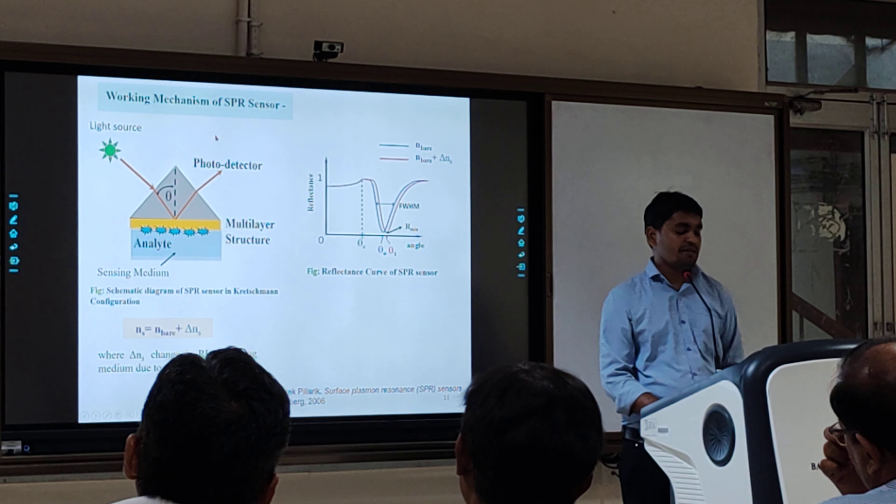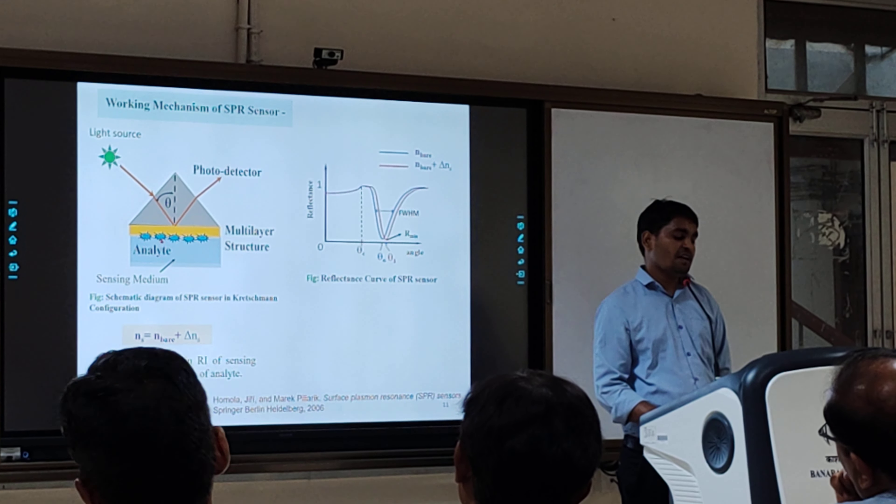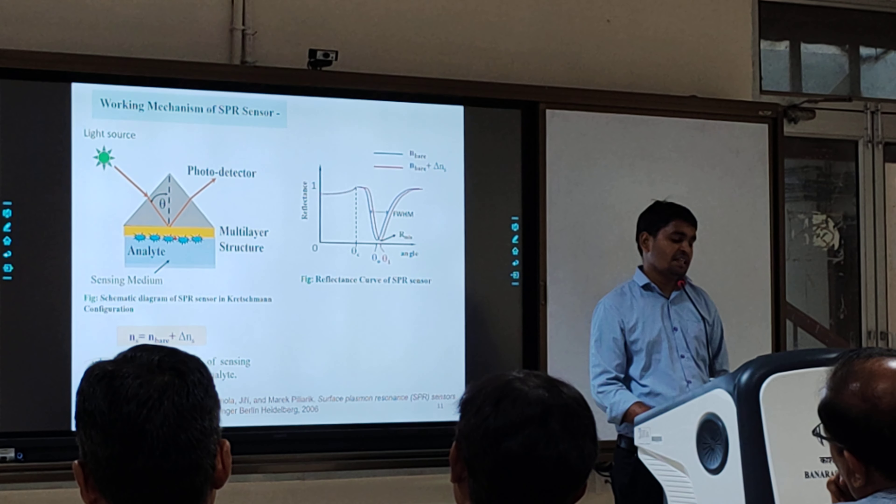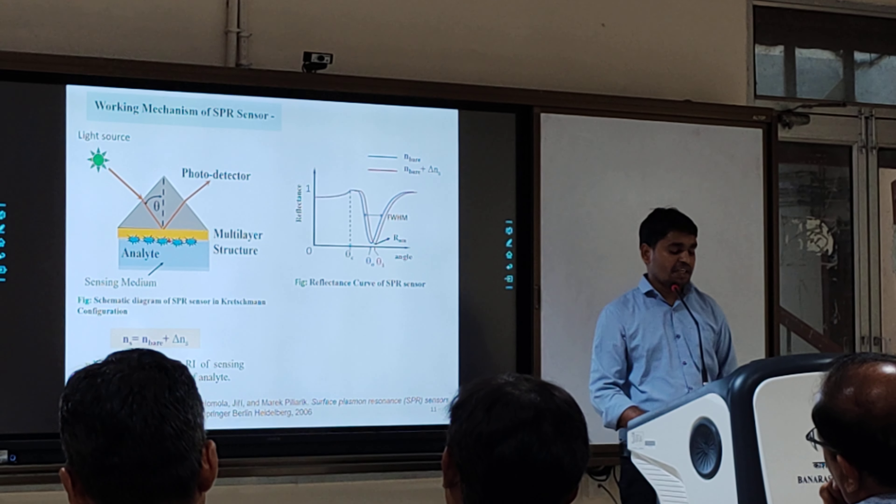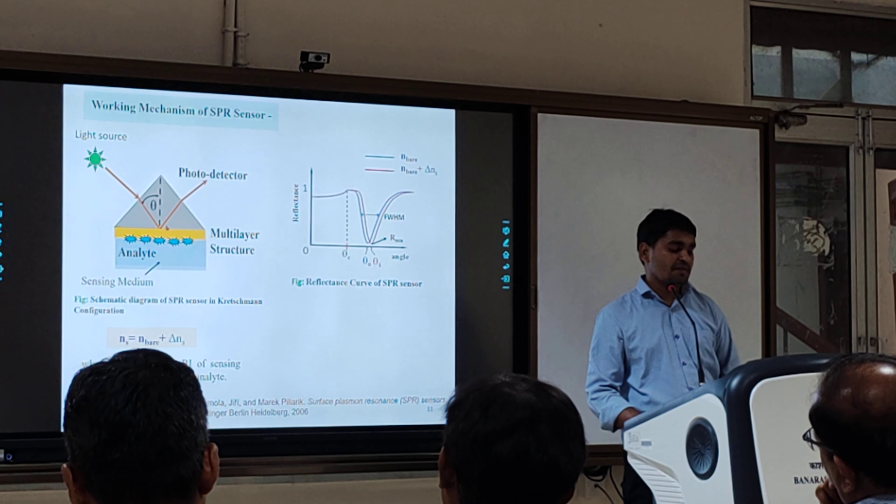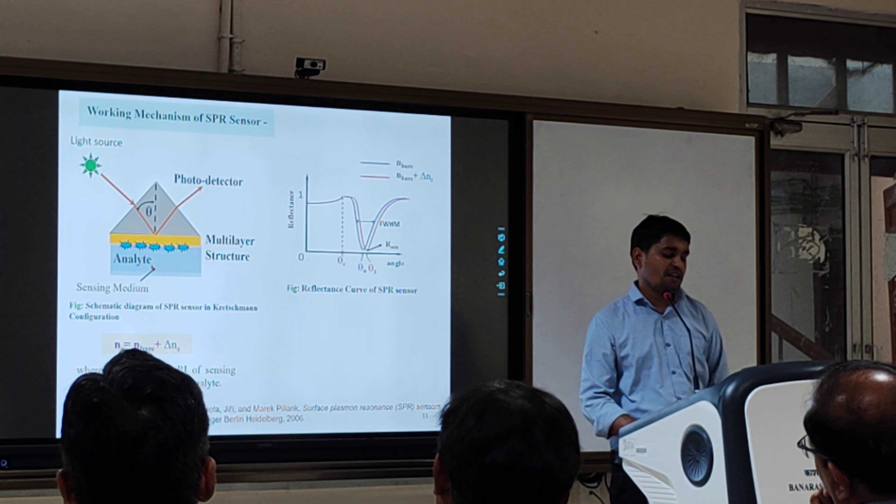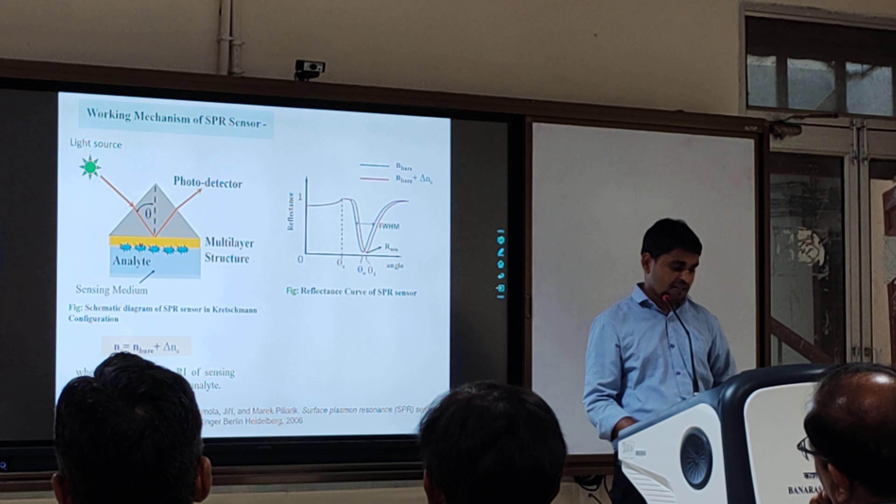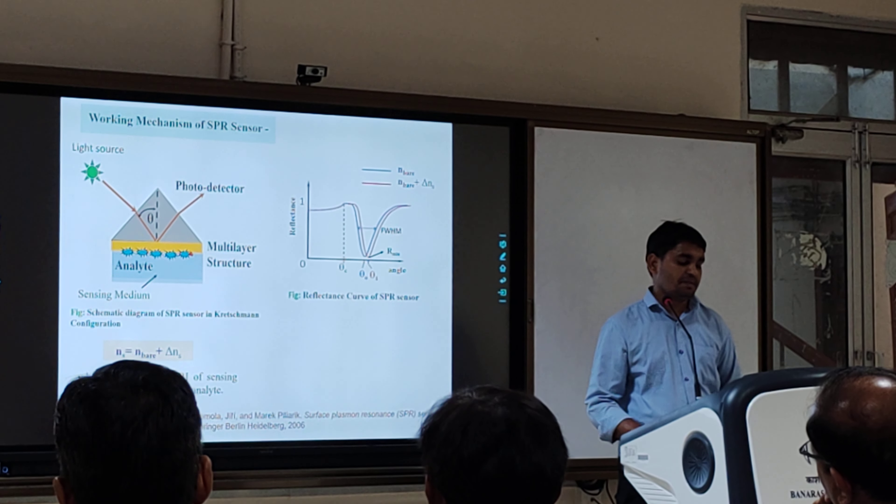For the sensing mechanism of surface plasmons, we have a metallic layer attached to the prism base, and the sensing medium is placed near the metallic surface.